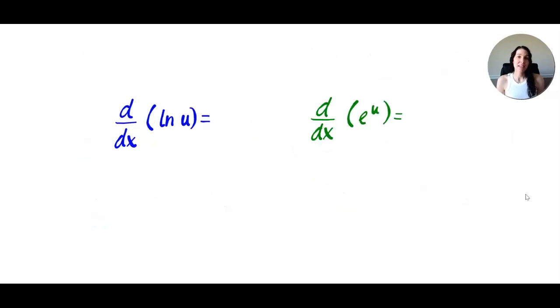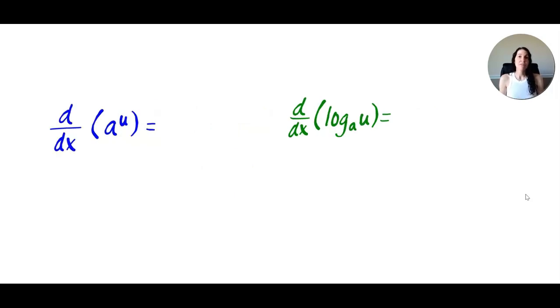Likewise, with the other derivatives that I went over, such as the derivative of natural log of u, it would now be 1 over u times u prime. And if you put those together, it's an easy way to think of it as u prime over u. The derivative of e to the u is now e to the u, but then we have to do that chain rule and multiply by the derivative of u. Likewise, the derivative of a to the u is now a to the u times natural log of a times u prime.